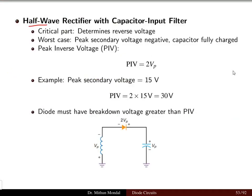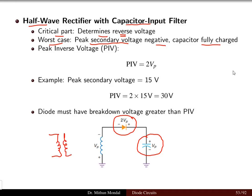We will see for the half-wave rectifier using the capacitor input filter what the peak inverse voltage is. When we have the half-wave rectifier, we have only one diode and there is a capacitor connected after the diode. We have to determine the reverse voltage which the diode has to withstand. We have seen in the previous lecture that there will be a step-down transformer connected, used to reduce the input supply voltage. The secondary voltage will be less than the primary voltage with respect to the turns ratio.